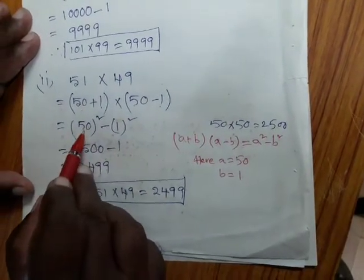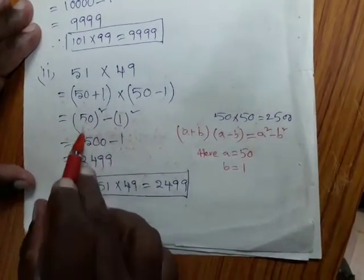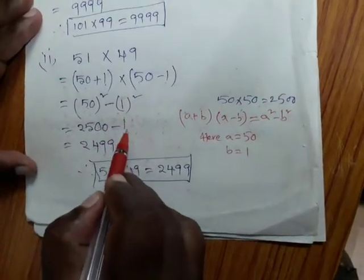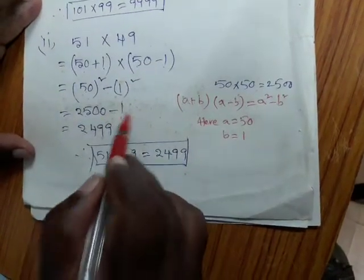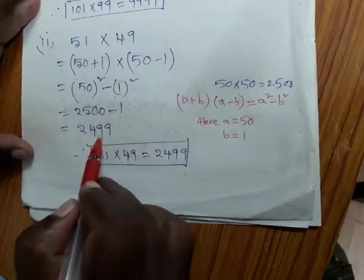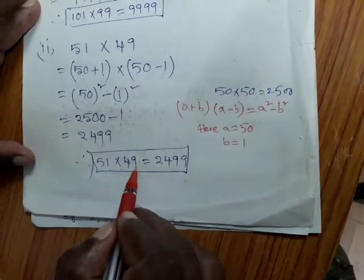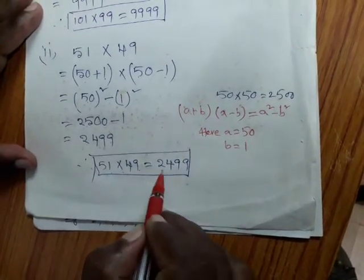That means A square, 50 square minus 1 square. 50 square means 50 into 50, 2500 minus 1 square means 1 into 1, which is 1. 2500 minus 1 equals 2499. Therefore 51 into 49 equals 2499.